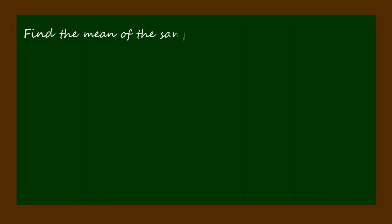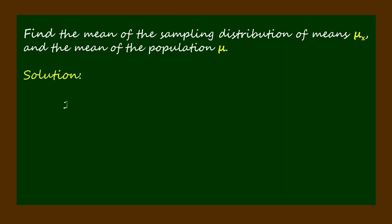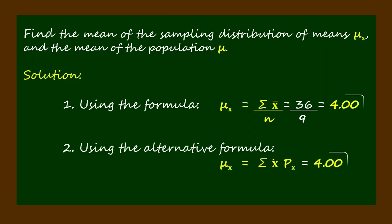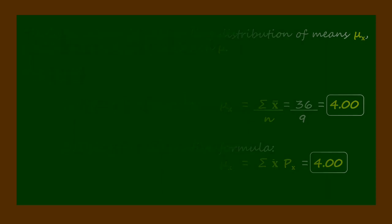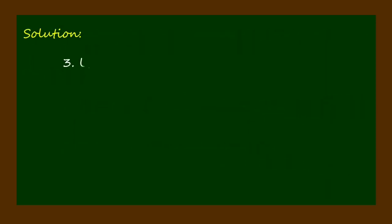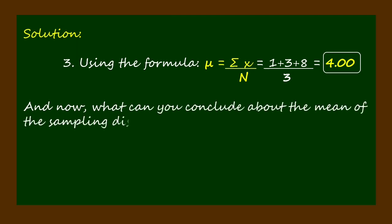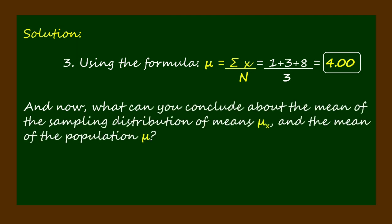Now let's find the mean of the sampling distribution of means mu sub x and the mean of the population mu. Using the given formula and the alternative formula, both yield the value 4.00 as the mean of the sampling distribution of means mu sub x. Using the given formula for finding the mean of the population mu, we also get 4.00. What can you conclude about the mean of the sampling distribution of means mu sub x and the mean of the population mu?